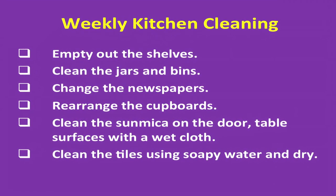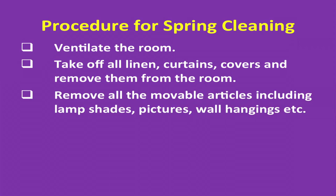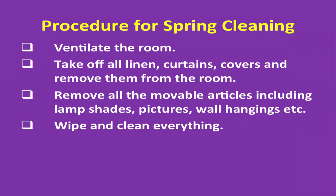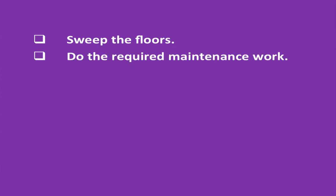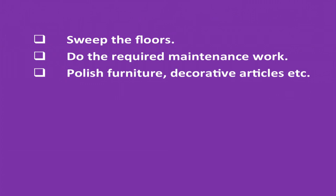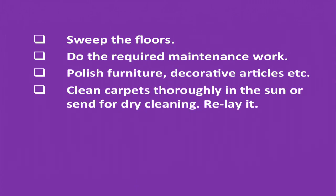Procedure for spring cleaning: ventilate the room. Take off all linen including curtains and remove them from the room. Remove all movable articles including lampshades, pictures, wall hangings, etc. Wipe and clean everything. If necessary, remove all furniture and furnishings from the room — at least remove soft furnishings like carpets. Clean the cobwebs. Sweep the floors. Do the required maintenance work. Polish the furniture and decorative articles. Clean carpets thoroughly in the sun or send for dry cleaning. Relay it and replace everything at the predetermined place including all furniture and fixtures. Rearrange the heavy furniture to give a new look.